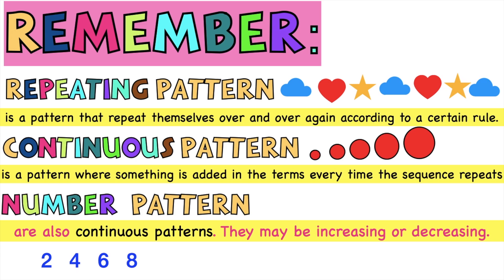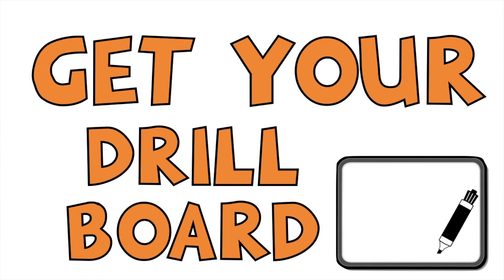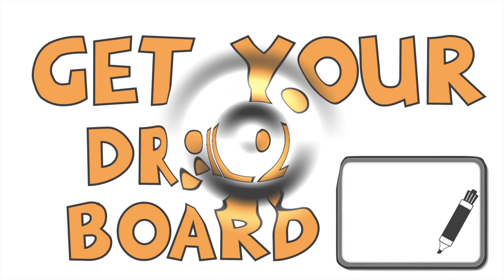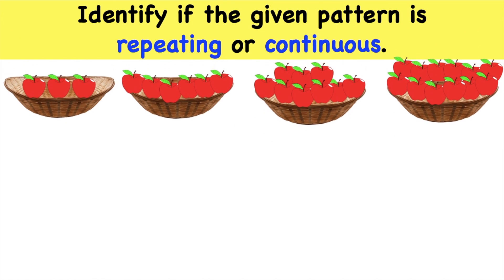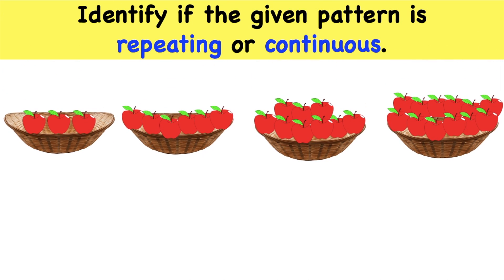For example, we have two, four, six, eight — this is an increasing pattern. And twenty-seven, twenty-four, twenty-one, eighteen — this is decreasing. Now it's your turn. Get your drill board. Using your drill board, I want you to identify if the given pattern is repeating or continuous. Are you ready? Let's have the first one. Is it repeating or continuous?